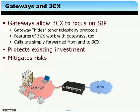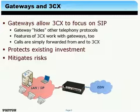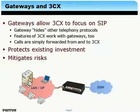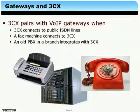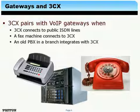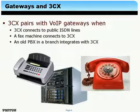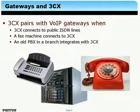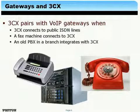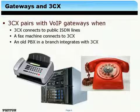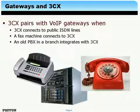It's kind of a protection of existing investments, because you might not want to throw away all your existing ISDN or analog lines or gear, but you can use gateways in order to connect them to the phone system. It mitigates the risk of a migration to a phone system. Typical situations when you want to use a VoIP gateway: when your 3CX phone system connects to public ISDN lines or analog lines, when you want to hook up a fax machine to your 3CX phone system, or if in a branch office there's still an old PBX that has to be integrated with the new phone system at headquarters.